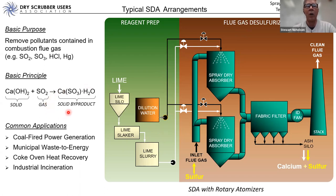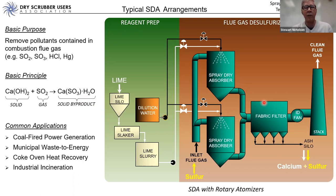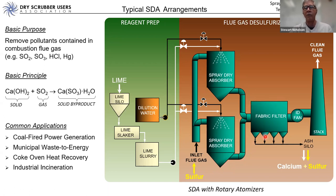One key chemical reaction is calcium hydroxide — produced in the reagent preparation systems — reacting with sulfur dioxide to produce a solid byproduct of calcium sulfate and similar compounds. These solid byproducts are then captured in a baghouse or fabric filter, or in older systems an electrostatic precipitator. Roughly 80 percent of SO2 removal occurs in the SDA vessels themselves, with perhaps 20 percent occurring on the surface of the bags in the fabric filter.